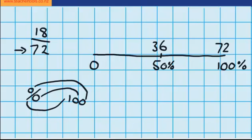So now that I know 50%, I should be able to work out 75%, because that's going to be halfway in between here, and I should also be able to work out 25%, because that's going to be halfway between 36 and 0, or half of 36.